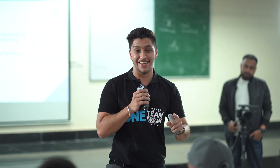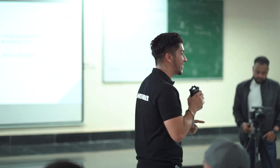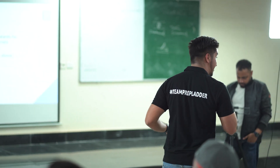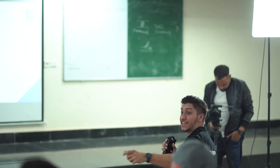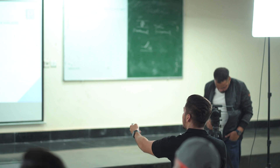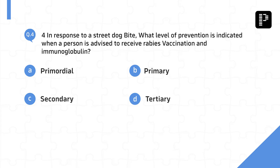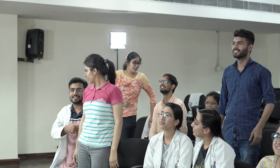Confidence. Very good. But the answer is the answer. Don't go first — you guys are taking the fun. Ready? Fourth question. In response to a street dog bite, what level of prevention is indicated when a person is advised rabies vaccination? No problem.